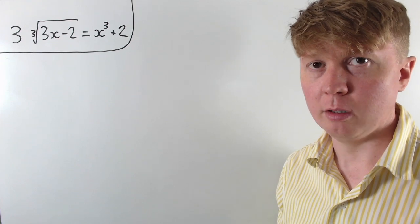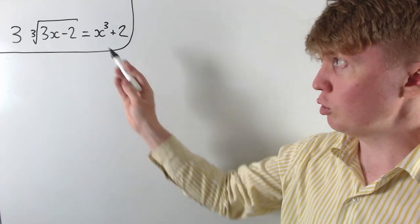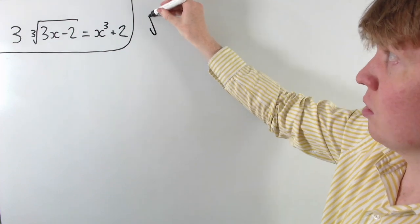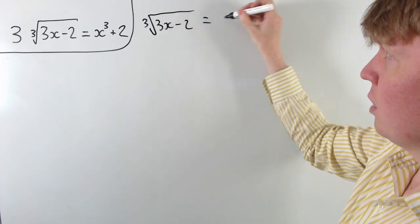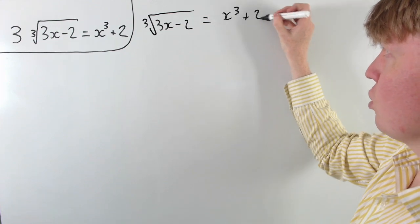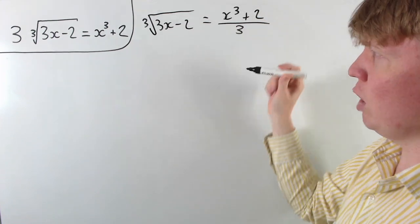OK, so we're going to solve this equation. Our solution lies on, if you divide by 3 on both sides, you can see this becomes the cube root of 3x minus 2 is equal to x cubed plus 2, all divided by 3.